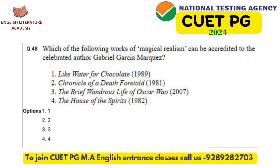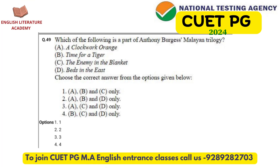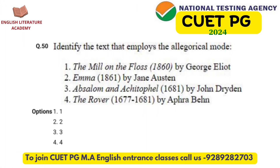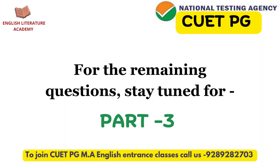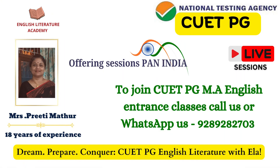Question 48 asks about the existence of magic realism in one of Gabriel Garcia Marquez's novels. The 49th question is about Anthony Burgess's Malayan Trilogy. The 50th question mentions four texts all very well studied during graduation in English Honours. Students have to identify which one is an allegory — considered quite an easy question that most can answer.